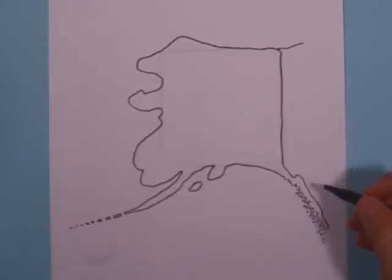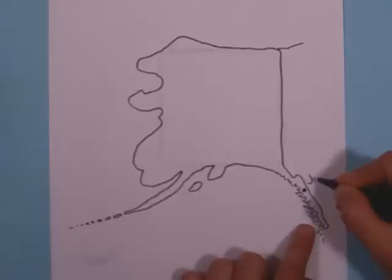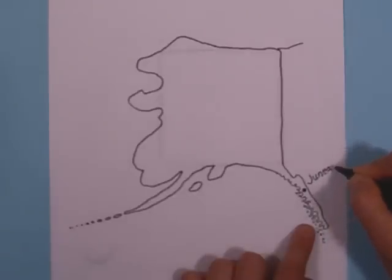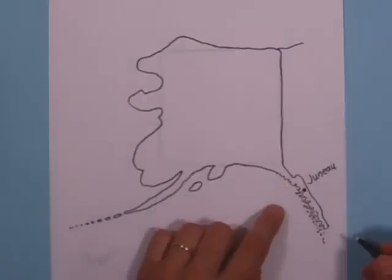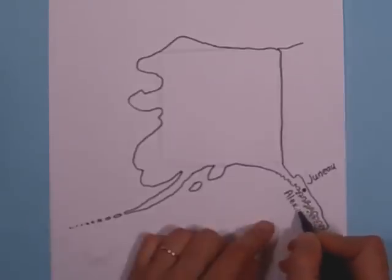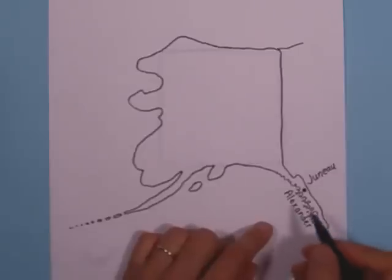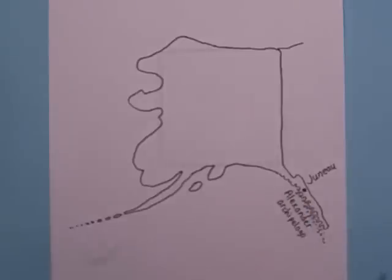The capital city of Alaska is actually down here — Juneau, J-U-N-E-A-U. And all these little islands down here are called the Alexander Archipelago. Alexander — and that's named after a Russian Tsar. The Russians named that.